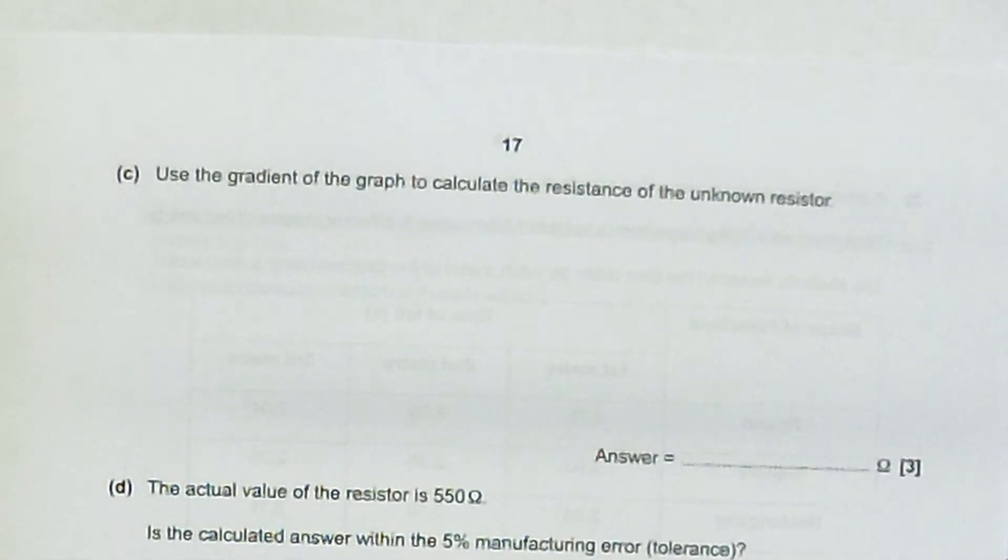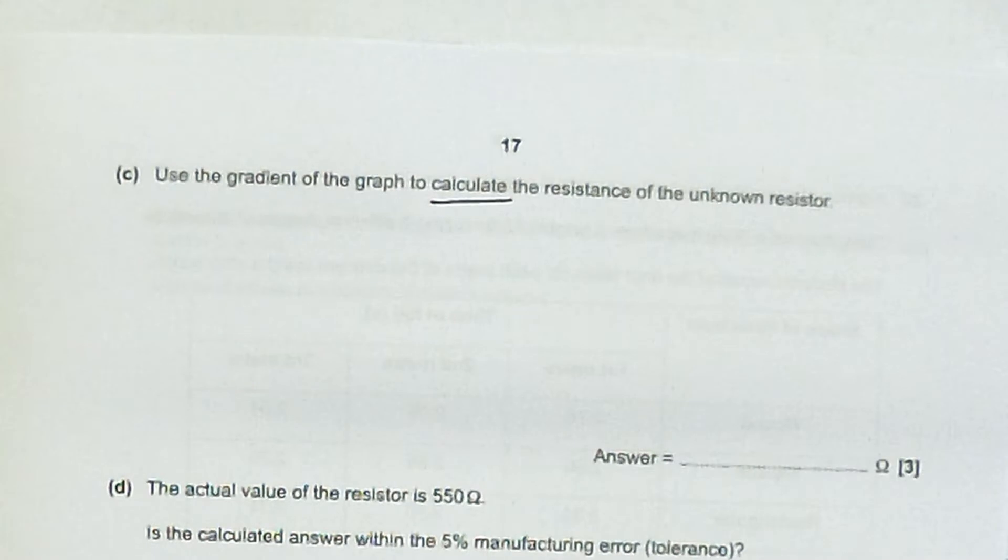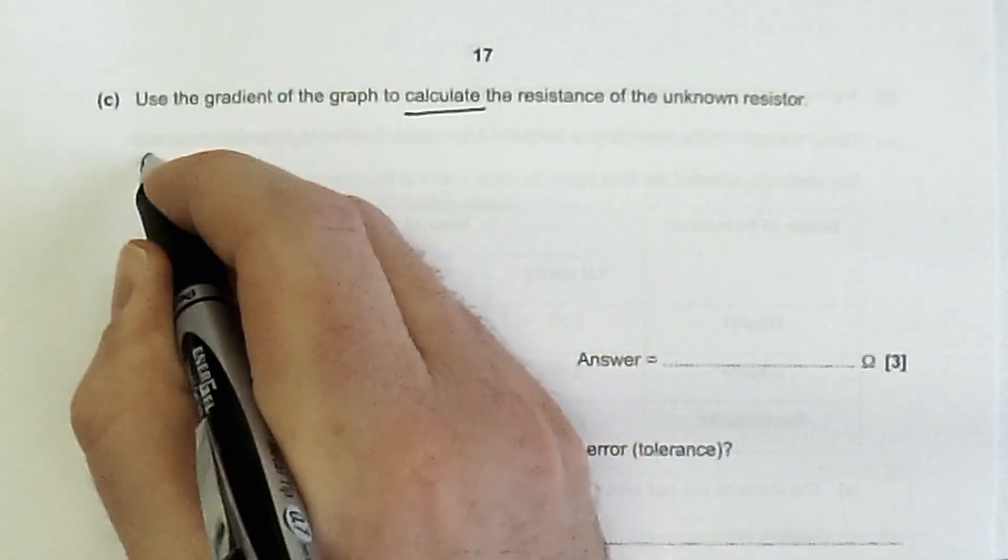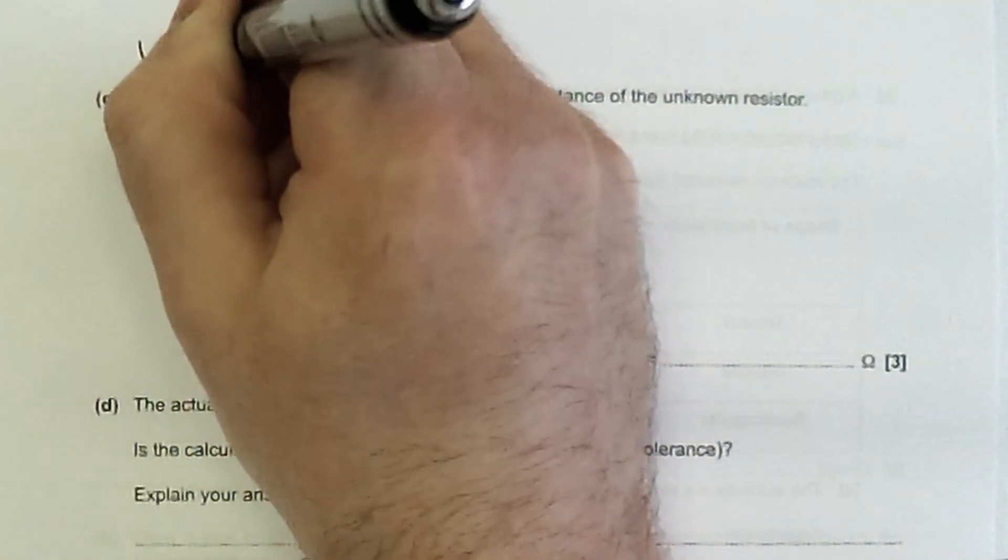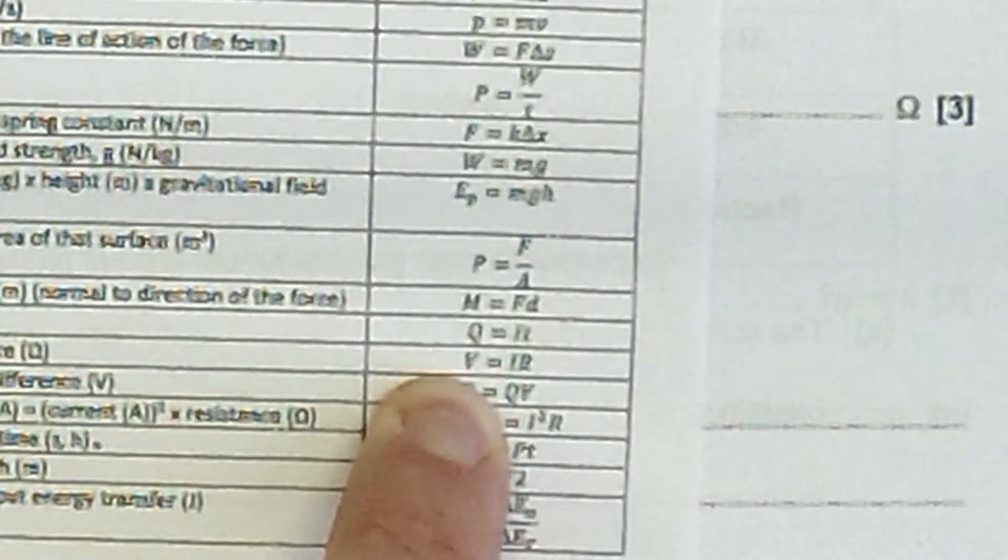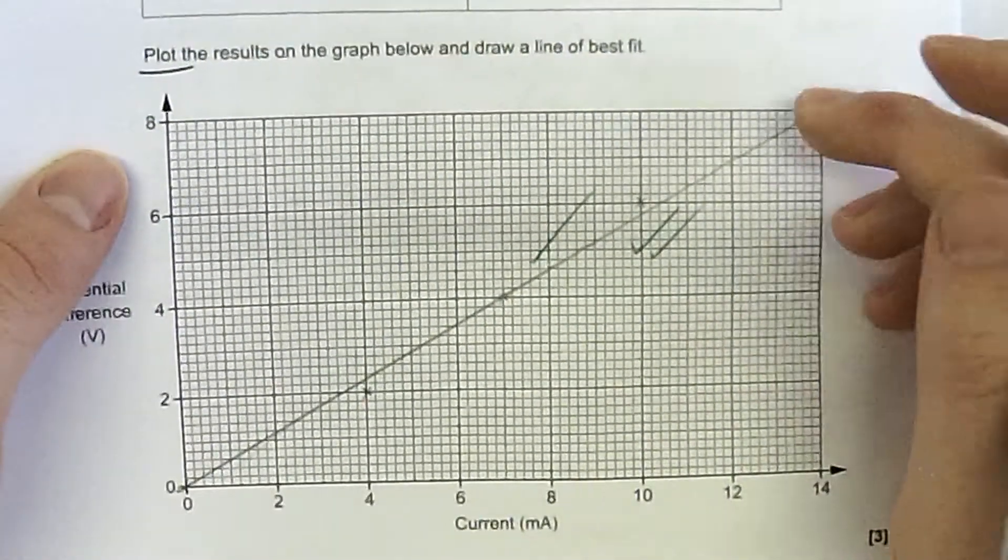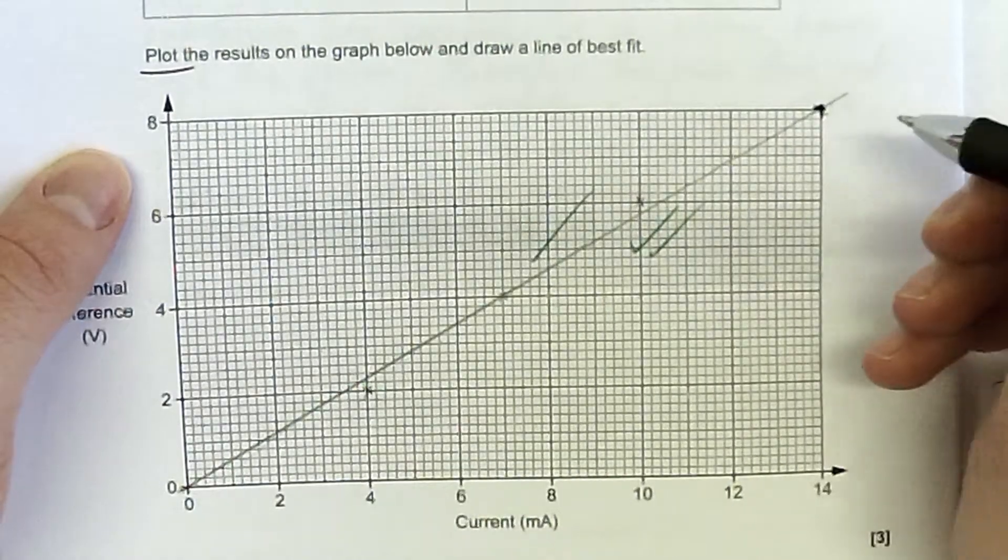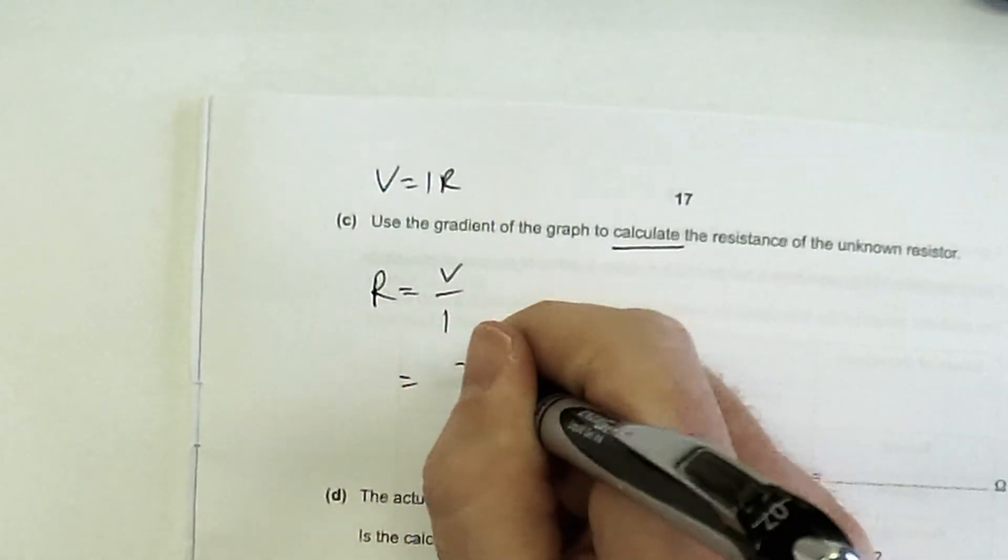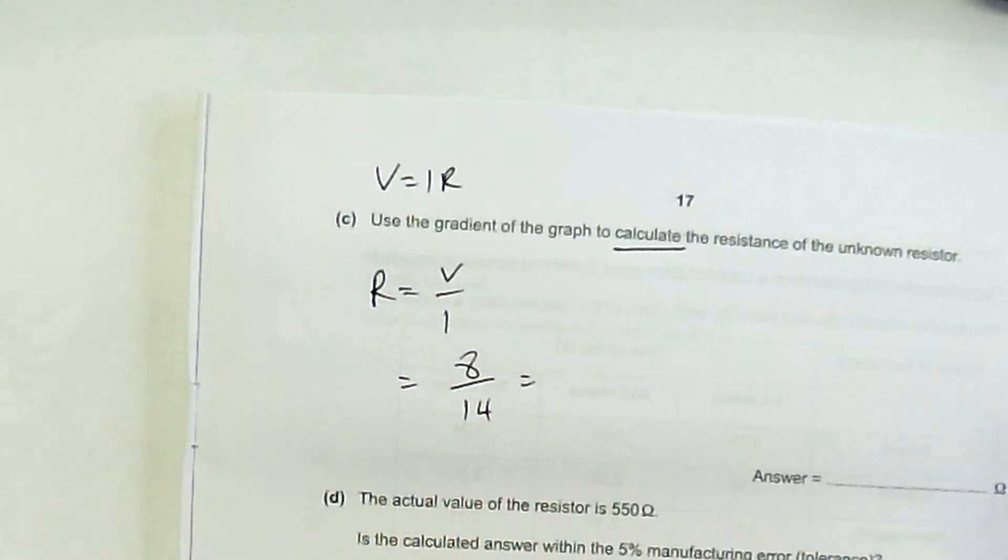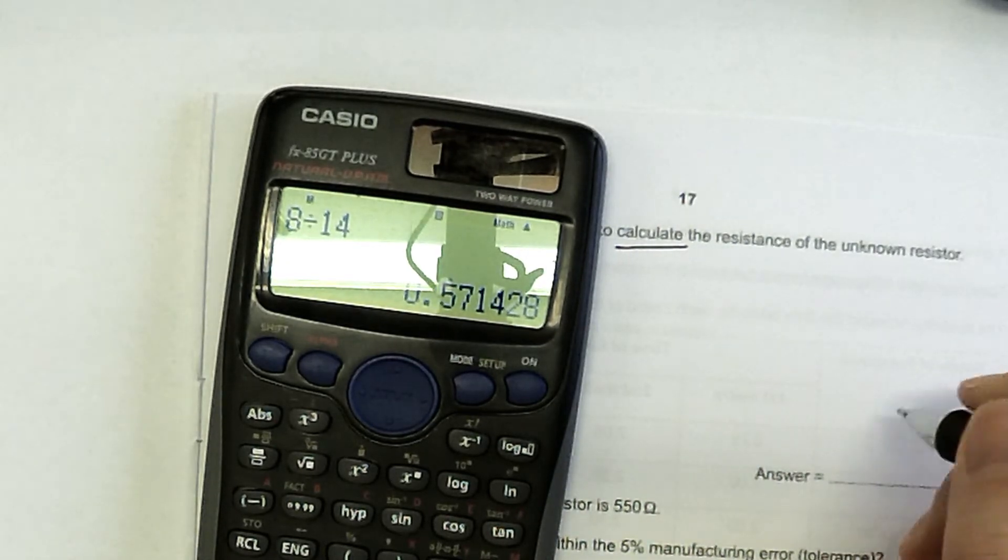Use the gradient of the graph to calculate the resistance of the unknown resistor. So it actually tells you to use the gradient to calculate the resistance. So you didn't really need to remember this because it's just to calculate the gradient, but this is using Ohm's law in its rearranged form, R is V over I. So Ohm's law you'll probably remember as V equals IR. One of the ones that you need to remember, one of the most important ones for solving circuit problems. So what is the rise over the run, basically? So here we go. I'll just use as big an area of the graph as I can. 8 volts over 14 amps gives me 0.57.